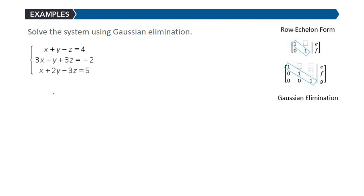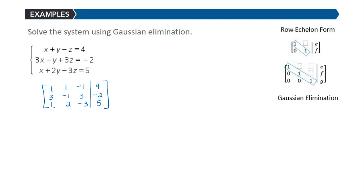We begin by writing our augmented matrix, which is 1, 1, negative 1, 4 in the first row; 3, negative 1, 3, negative 2 in the second row; and 1, 2, negative 3, 5 in the third row. We're lucky because we have a 1 in the first row, first column, so now we need to get zeros below that.